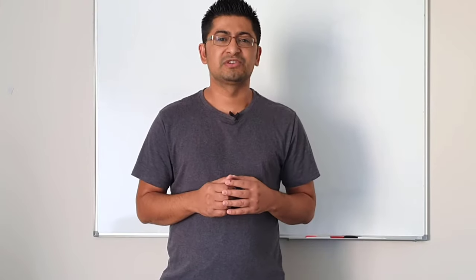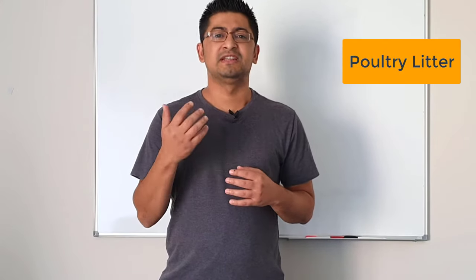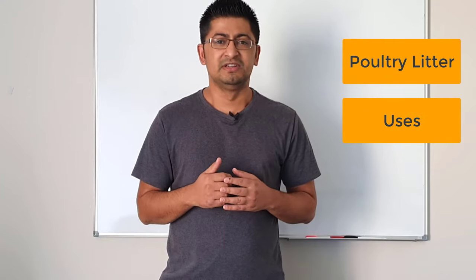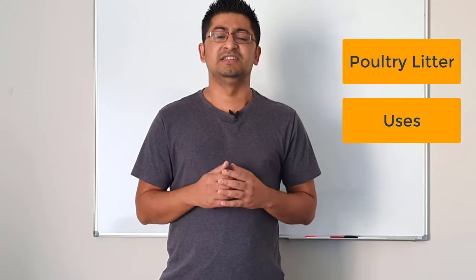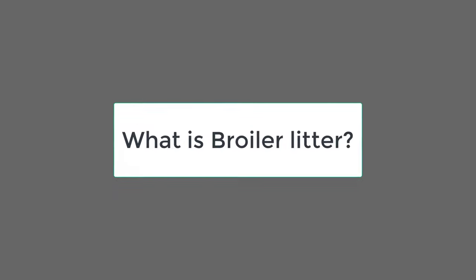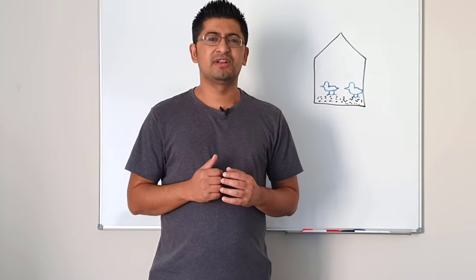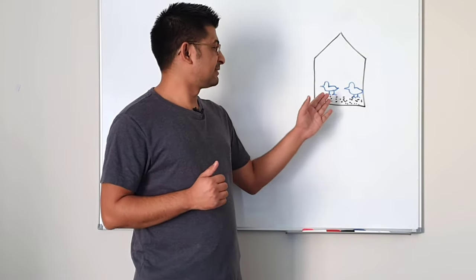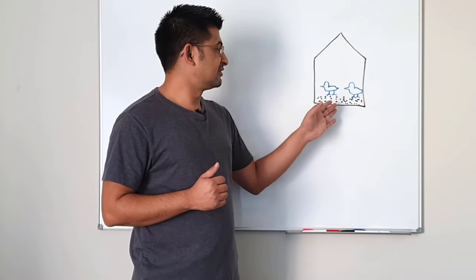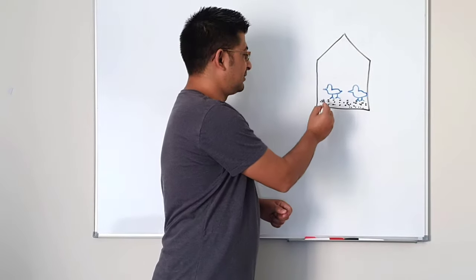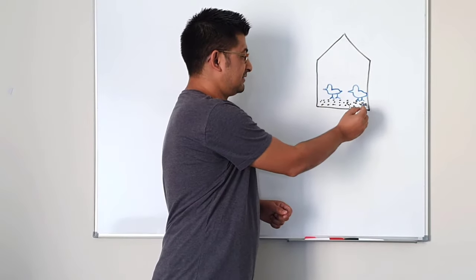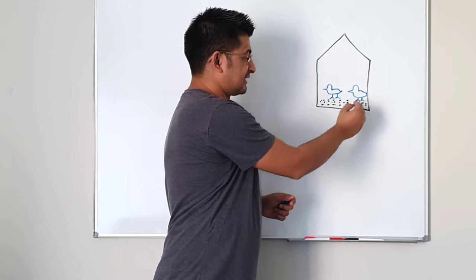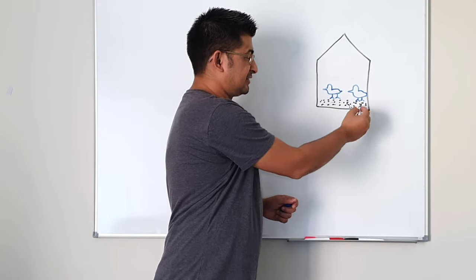In this video, we are going to talk about poultry litter, especially broiler litter and the uses of broiler litter. So let's get into the topic. What is broiler litter? If you look at this poultry house — this is a poultry house I drew here — and if you look down here, you can see these black things. These are called poultry litter.